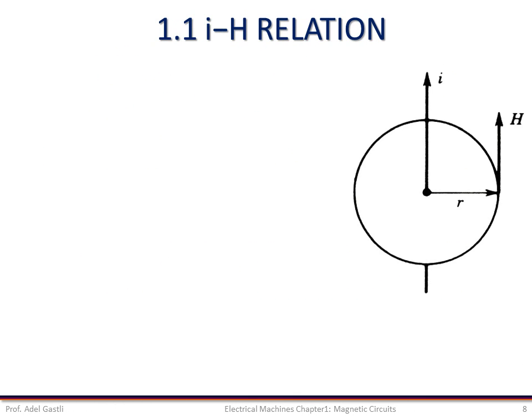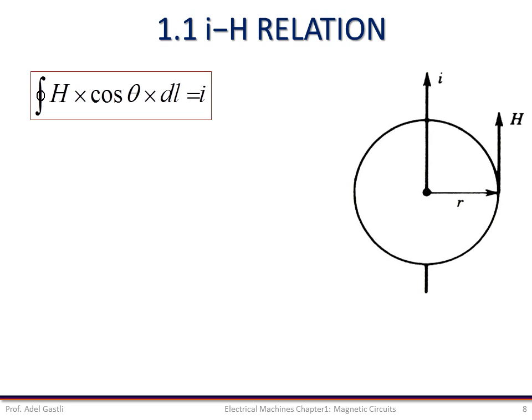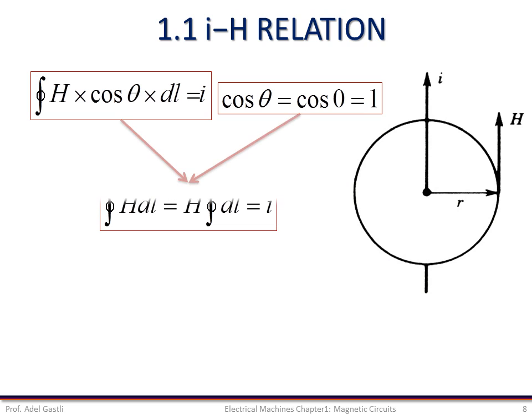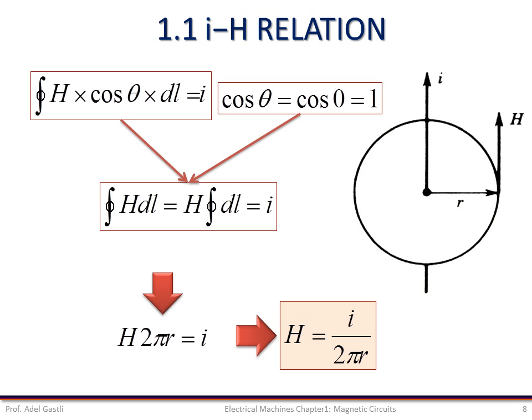Now consider a particular case where the contour is circular. At each point of this circular contour, H and dl are in the same direction — that is, theta equals 0 or cosine theta equals 1. Because of symmetry, H will be the same at all points of this contour, giving us this simplified equation. Since the length of the circular contour is the perimeter 2πr, where r is the radius, we obtain this equation. Thus, the magnetic field intensity H as a function of current I is given by this equation, showing a linear relationship between I and H for the same radius.